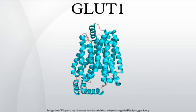GLUT1 was the first glucose transporter to be characterized. GLUT1 is highly conserved; GLUT1 of humans and mouse has 98% homology. GLUT1 has 40% homology with other GLUTs.